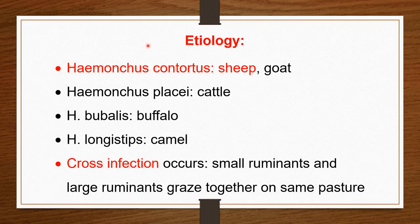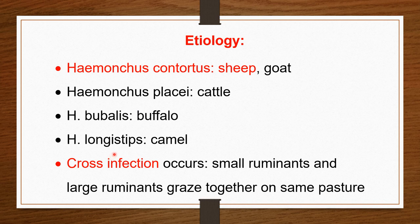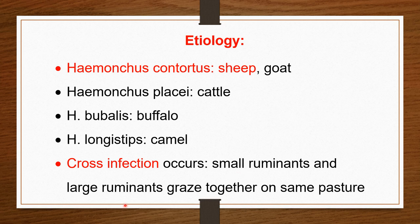Many Haemonchus species exist, but the most common is Haemonchus contortus, affecting mostly sheep and goats — sheep are highly susceptible. Haemonchus placei affects cattle, Haemonchus bubalis affects buffalo, and Haemonchus longistipes affects camels mostly. Cross-infection also occurs when small ruminants and large ruminants graze together on the same pasture — they share the infection between small and large animals.